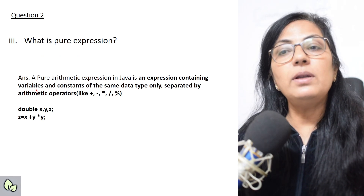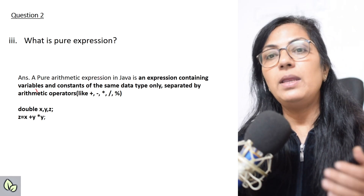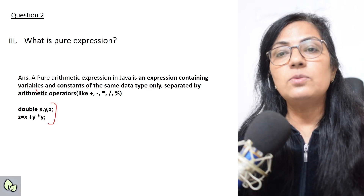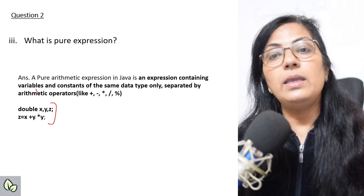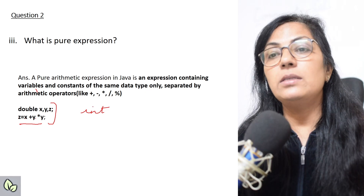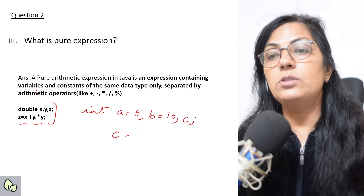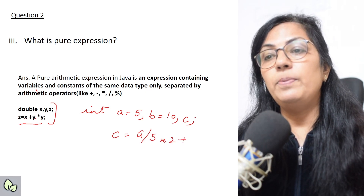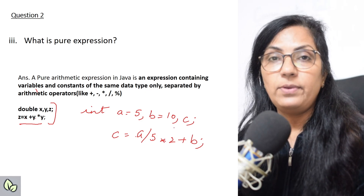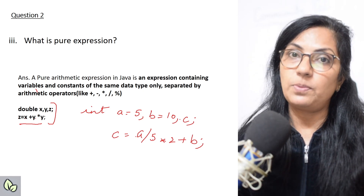Next question: what is a pure expression? A pure arithmetic expression in Java is an expression containing variables and constants of the same data type only, separated by mathematical operators like +, -, *, /, and %. For example: double x, y, z; z = x + y * y — all three are of double data type, so this is a pure expression. Similarly, if int a=5, b=10, c and c = a/5*2 + b — all variables and constants are int type, so that is also a pure expression.